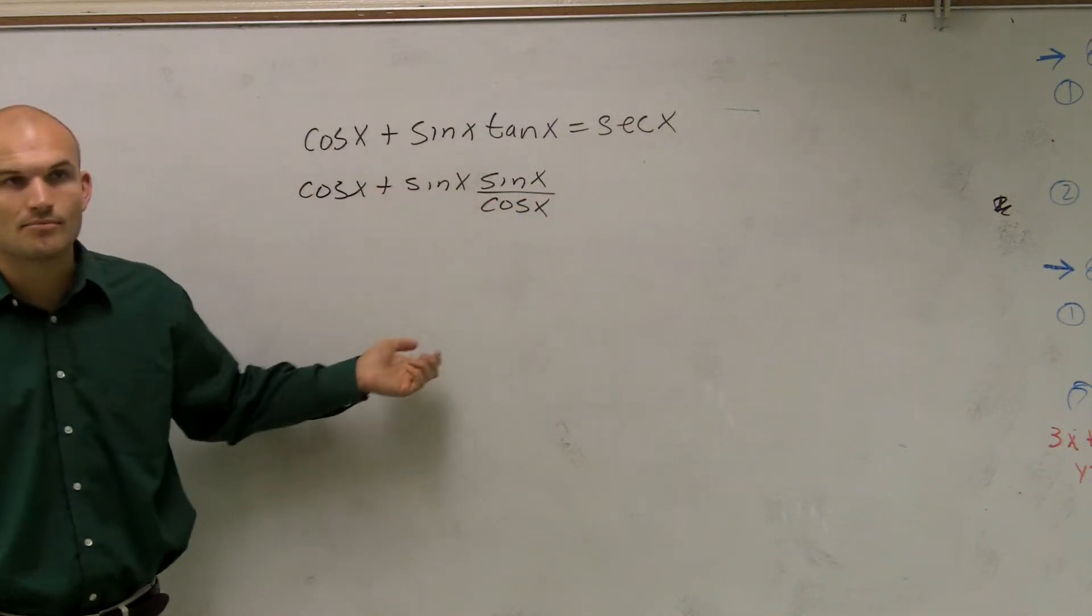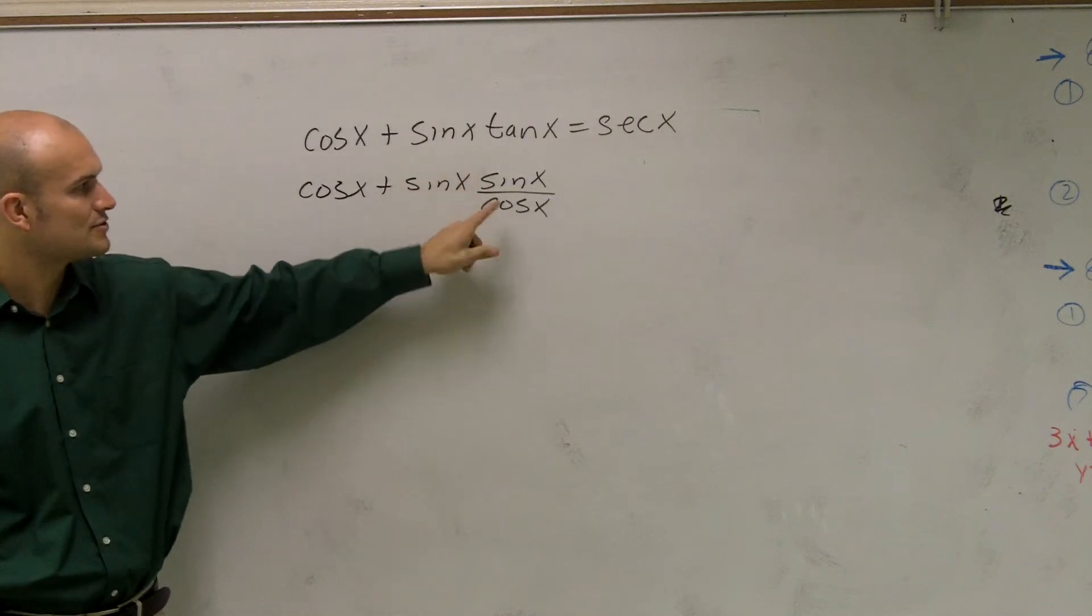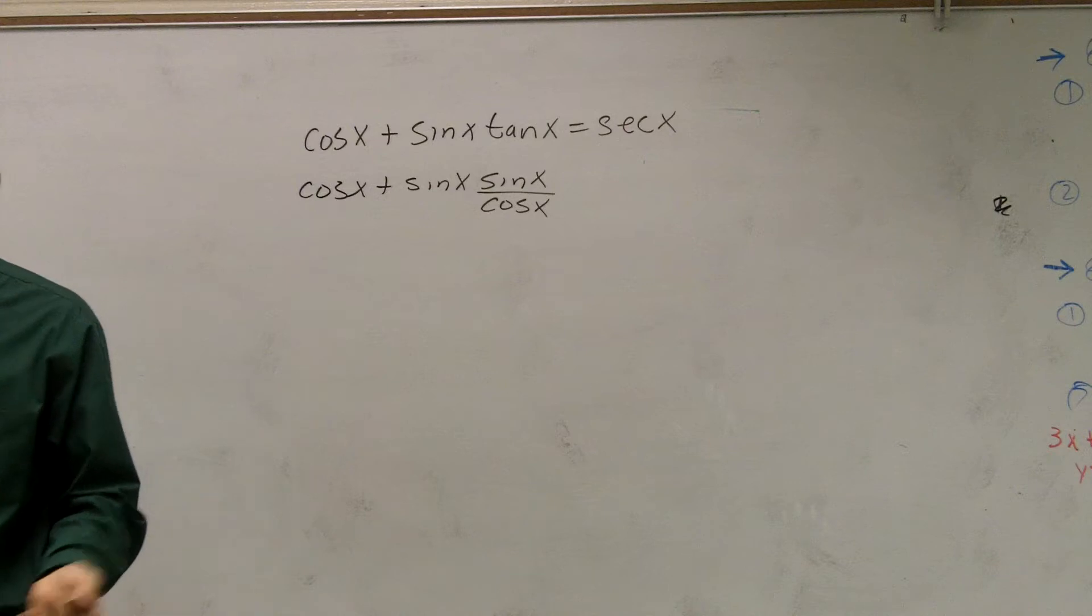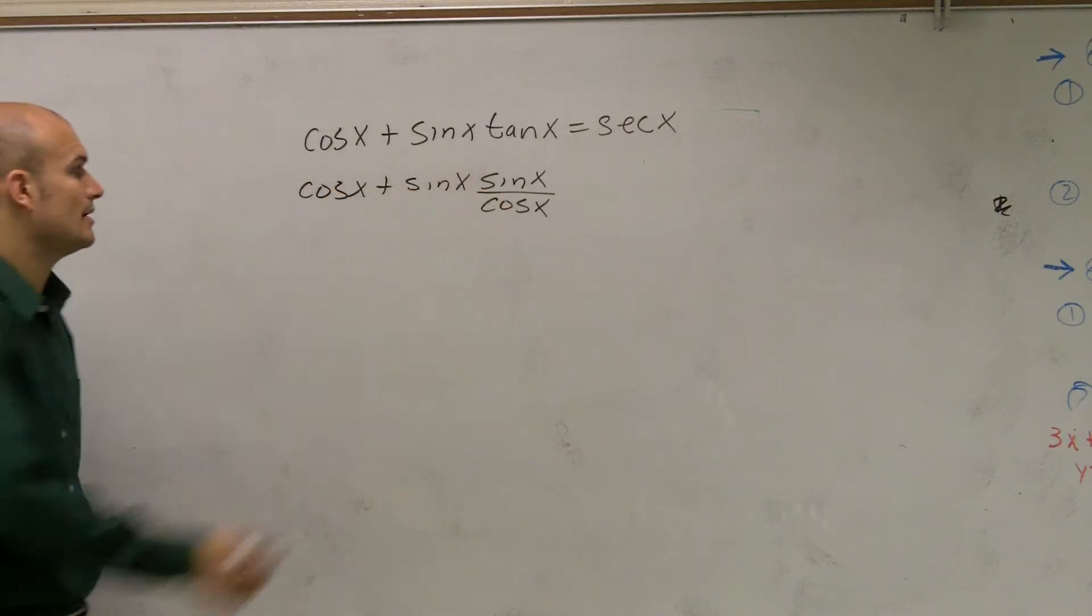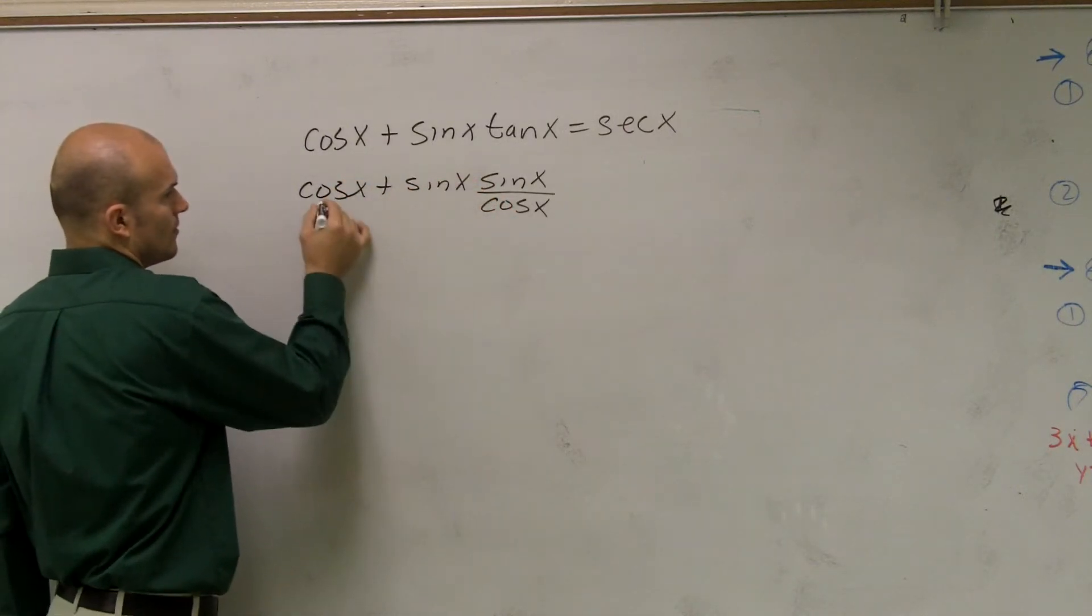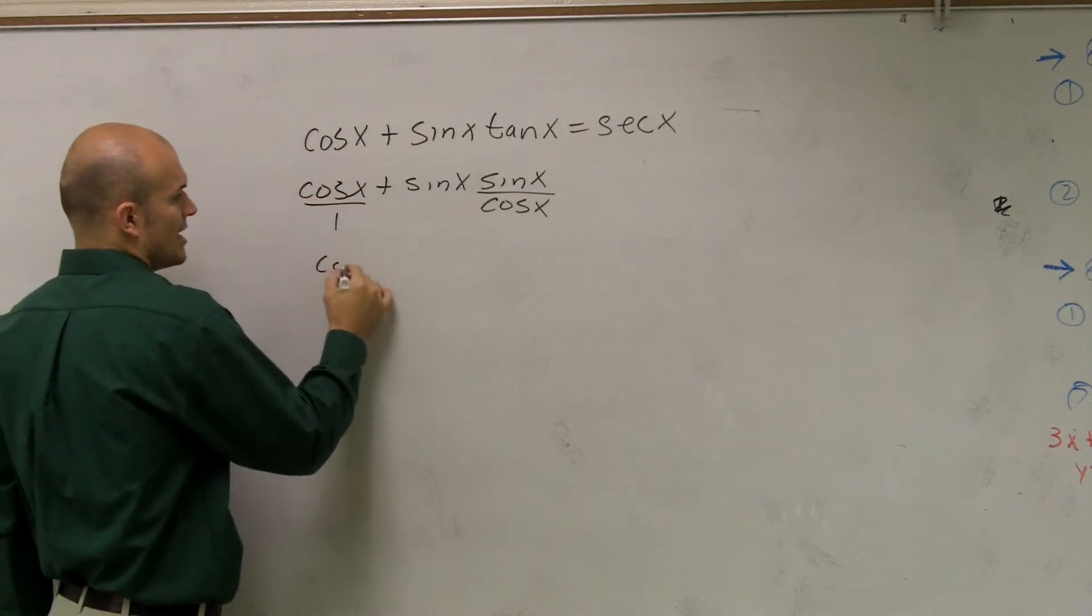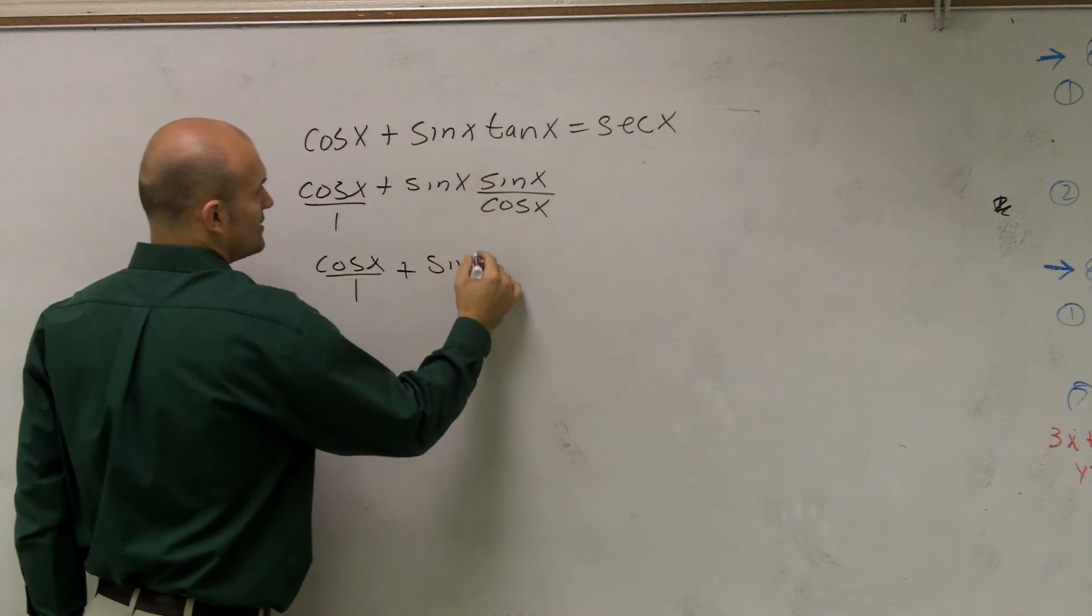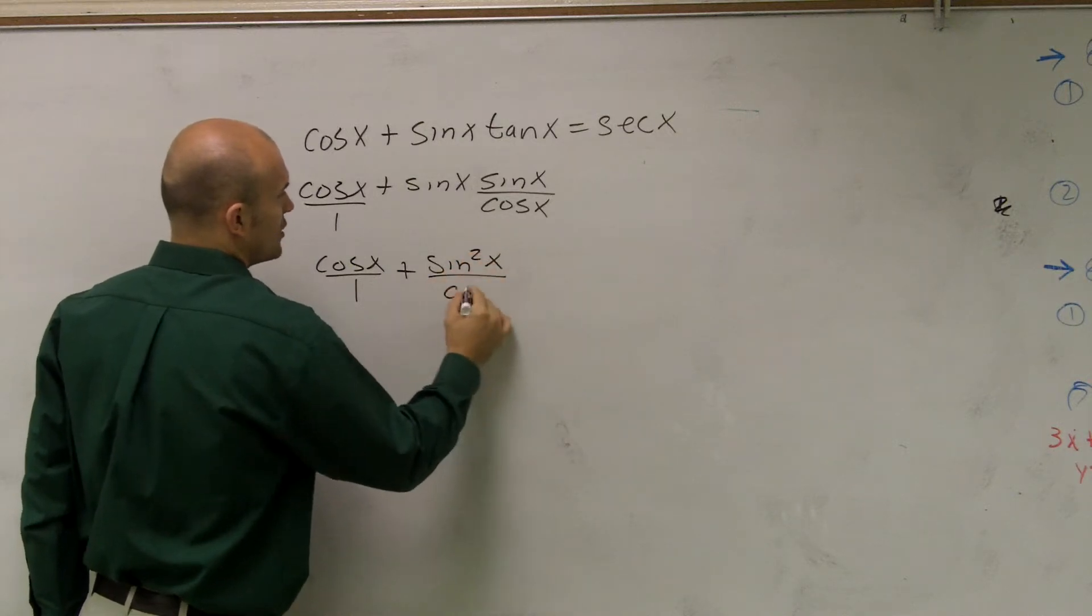Now, what I can do is I can multiply this out. I can multiply this through. And then what I notice is I can now have this as a cosine, my cosine is going to be my denominator. So I'll take that, put over 1. So I have cosine of x over 1 plus sine squared of x over cosine of x.